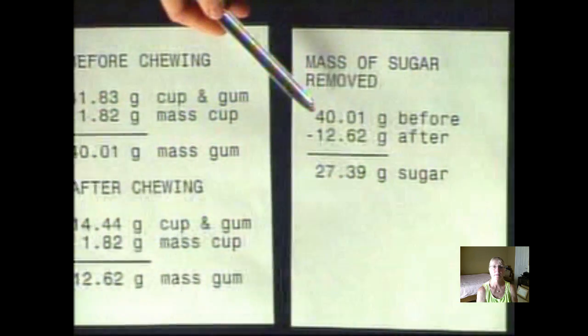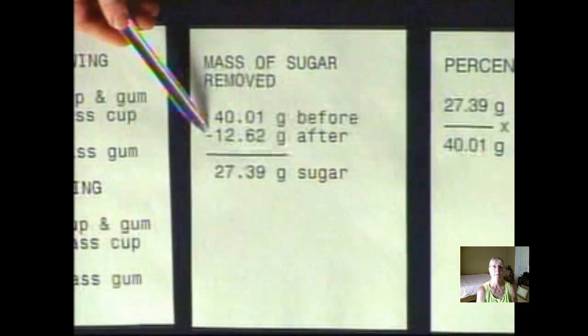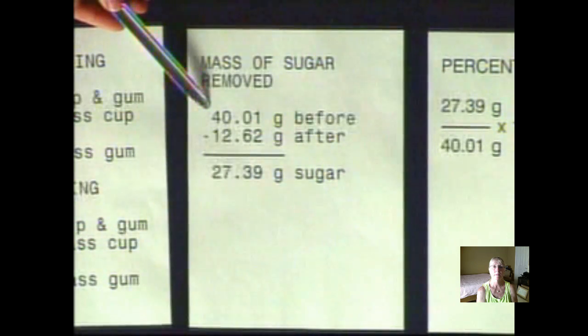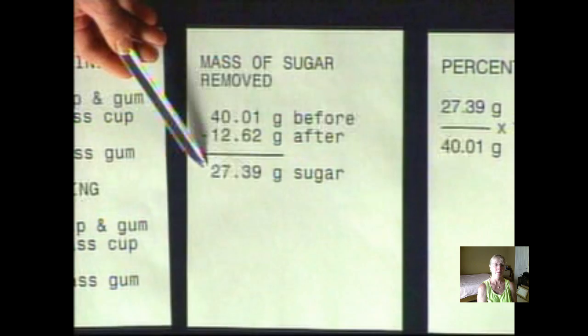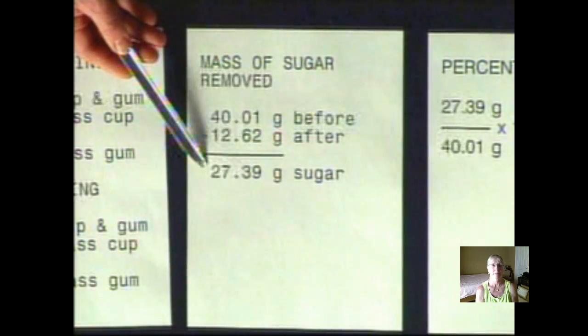Subtracting the mass of the gum without sugar from the gum with sugar, we found that we had 27.39 grams of sugar in the five pieces of chewing gum.